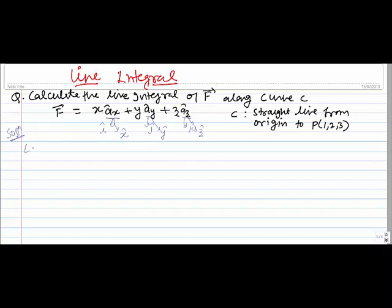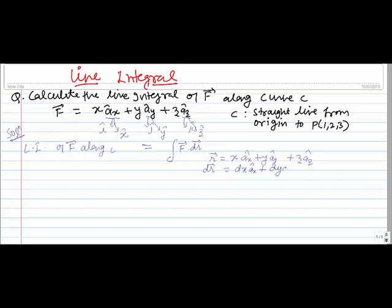How do we do it? We know the line integral of F vector along any curve C is defined as the integral of F·dr over C. We know the position vector r is defined as x·ax_cap + y·ay_cap + z·az_cap. So dr, the differential element, will be dx·ax_cap + dy·ay_cap + dz·az_cap.